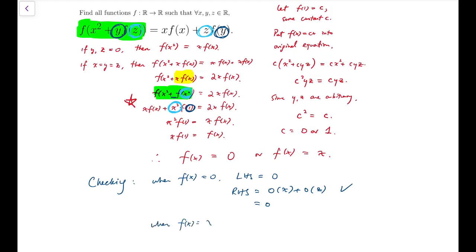And finally, when f of x is the identity function on x, then left-hand side would then be x squared plus yz, while right-hand side will also be equal to x squared plus yz. So again, check. So these two are both valid solutions.